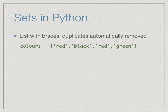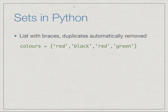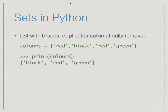A set is like a list except that you don't have duplicates. In Python, one way of writing a set is to write a list with braces. Here we have associated with the name 'colors' a list of values: red, black, red, and green. Notice that we have repeated 'red', but because this is a set the duplicate will be automatically removed. So if we print 'colors' we just get: black, red, and green.